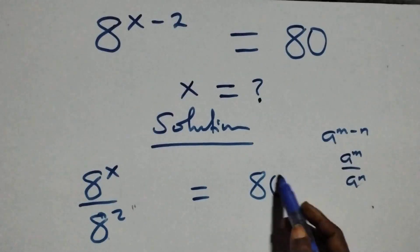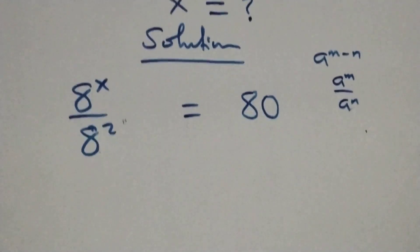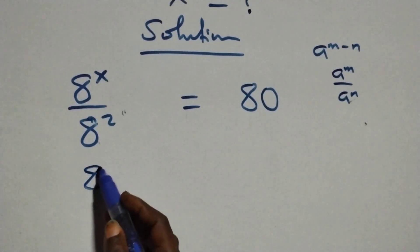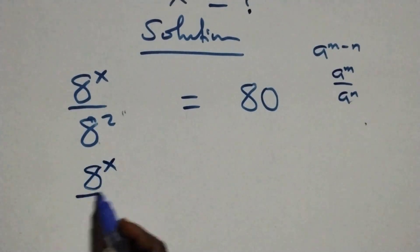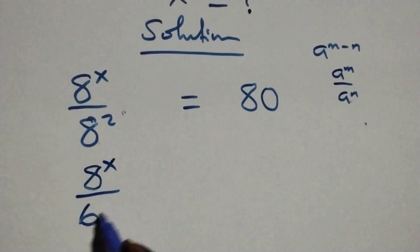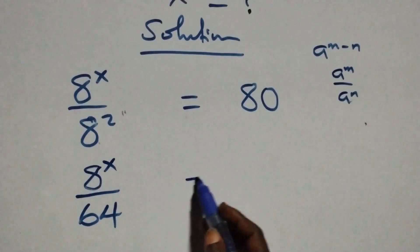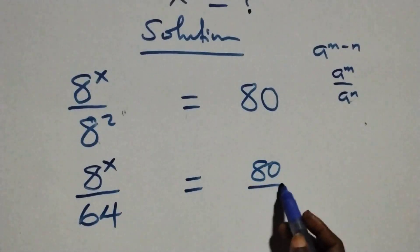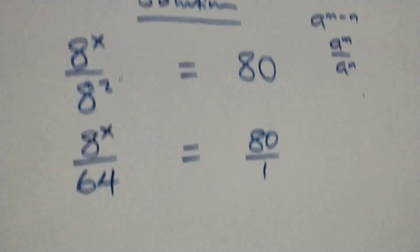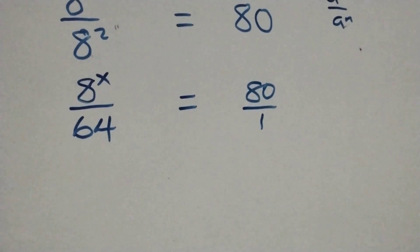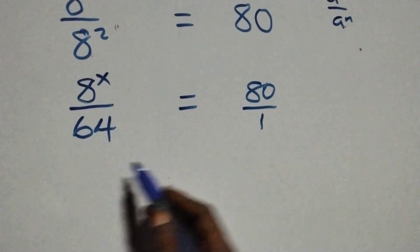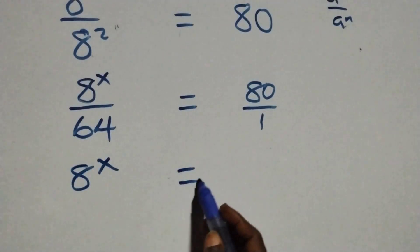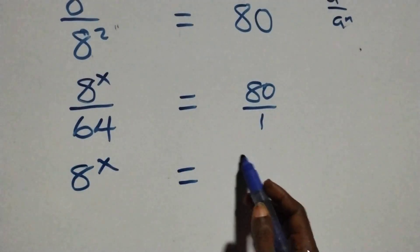On this side, this becomes 8 raised to power x over 8 squared. 8 times 8 is 64, then equals 80 over 1. The next step here, we cross multiply: 8 raised to power x times 1, same thing as 8 raised to power x, equals 80 times 64.